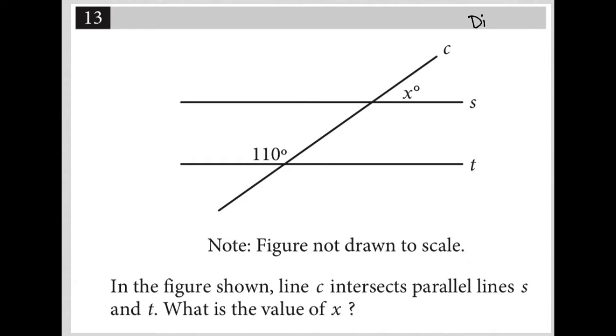So this question is a diagram question. I say that about any question that provides some visual input. It looks like we have parallel lines here at S and T with a transversal here at line C. I'm going to read just to make sure that's the case. In the figure shown, line C intersects parallel lines S and T. So I am correct.